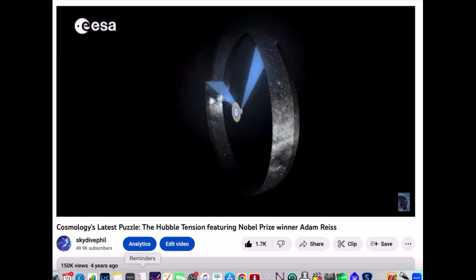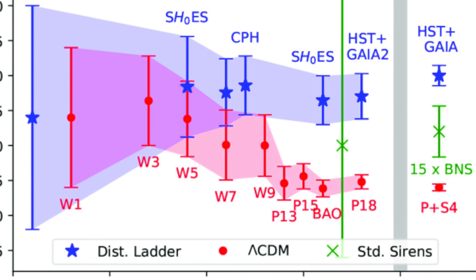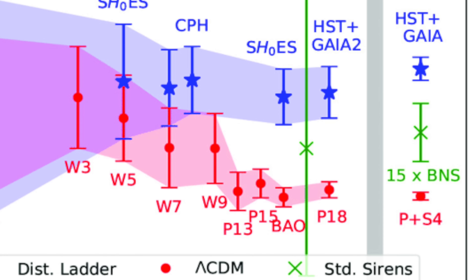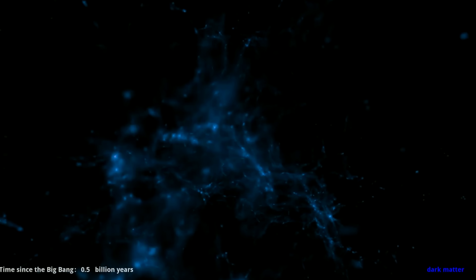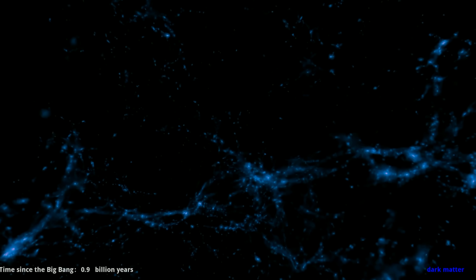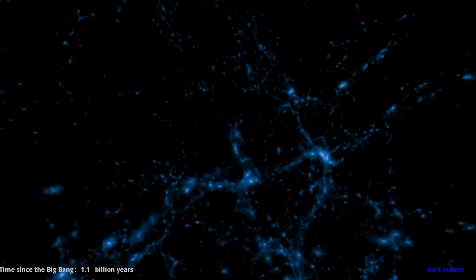Four years ago, we reported cosmologists puzzling over a serious discrepancy between two independent measurements of our cosmic expansion rate. This Hubble tension has been dubbed the biggest crisis in cosmology. But now there's a new problem — the S8 tension. Yet again, two independent measurements of a fundamental cosmological parameter do not agree. This time, it's not the expansion rate at issue, but the growth of structures within the universe. And if shown to be real, it may cause us to rethink the very origin and fate of the cosmos.